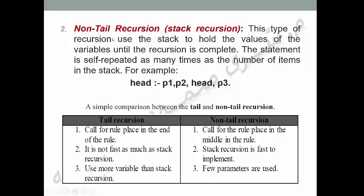النوع الثاني: Non-tail recursion (العودة الغير ذيلية)، ويطلق عليه أيضاً stack recursion. This type of recursion uses the stack to hold the values of the variables until the recursion is complete. يستخدم هذا النوع من العودة الـ stack للاحتفاظ بقيم المتغيرات لحين اكتمال العودة. The statement is repeated as many times as the number of items in the stack.